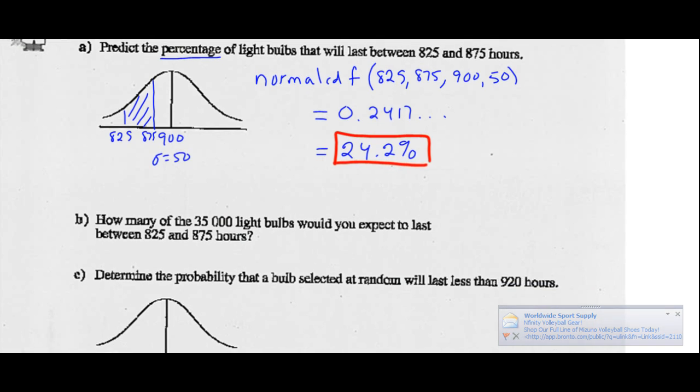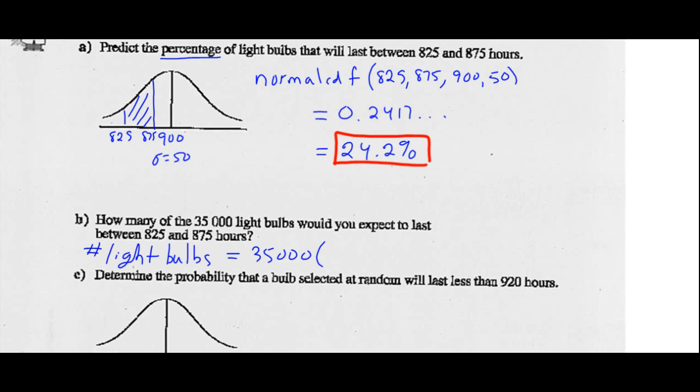Part B: Predict how many of the 35,000 light bulbs would you expect to last between this. So the number of light bulbs should be, there's 35,000 light bulbs and 24.2% of them, or 0.2417 and so on, will last between 825 and 875 hours. So you multiply those out, you get 8,460 light bulbs.